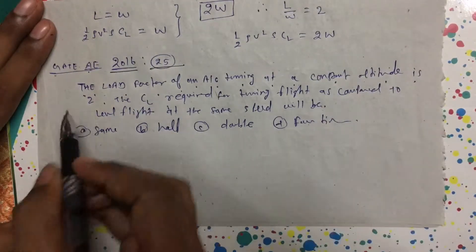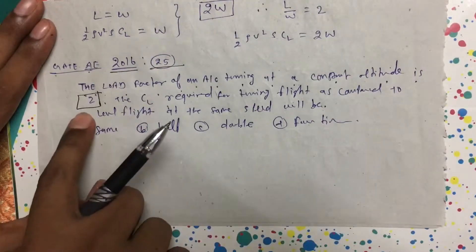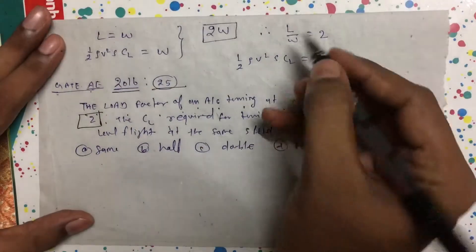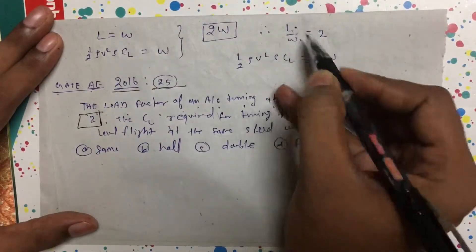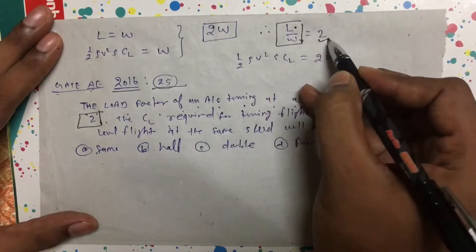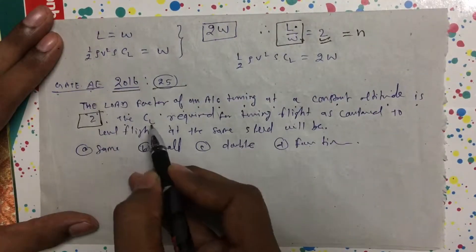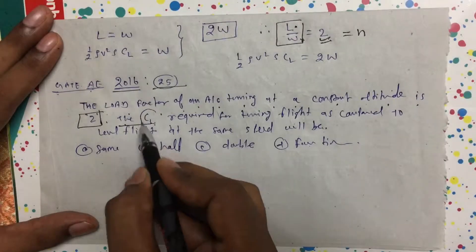So load factor is 2. First, what is load factor? L by W—lift by weight ratio—is known as load factor, and the symbol we use is n. CL is the coefficient of lift required for turning flight.